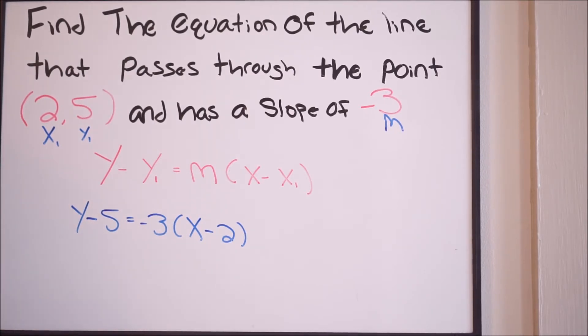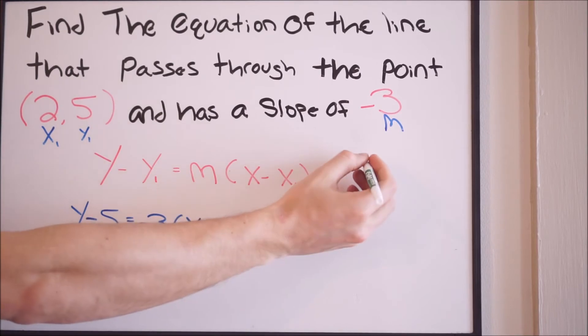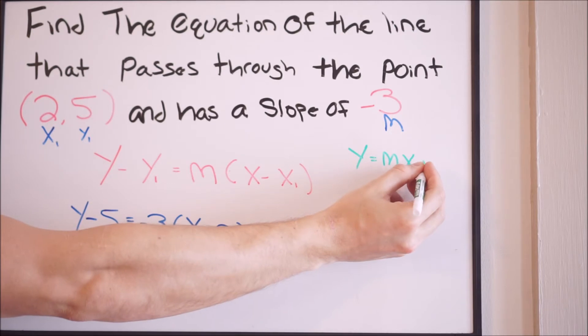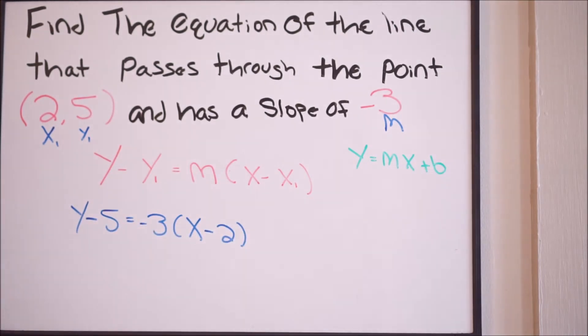Alright, so essentially what you want to do at this point is you want to rearrange this into slope-intercept form. If you forgot, slope-intercept form is the following: we have y equals mx plus b, so we want to write our final answer in slope-intercept form. We just have to do some rearranging here.